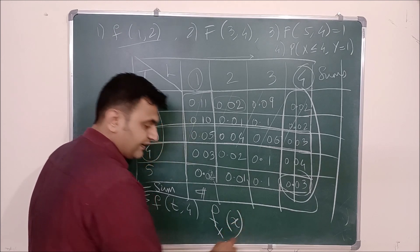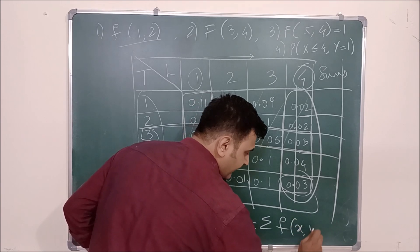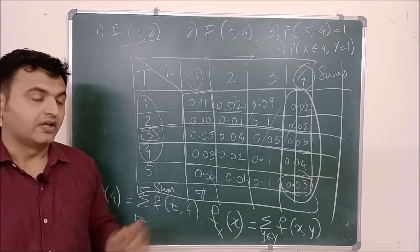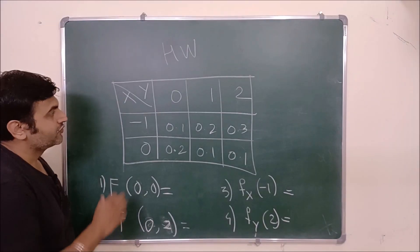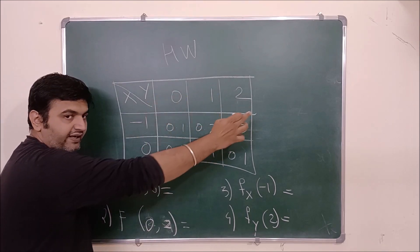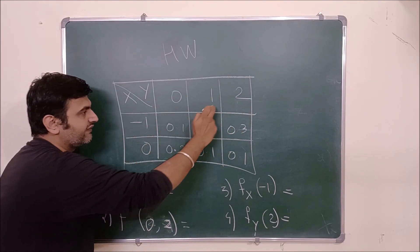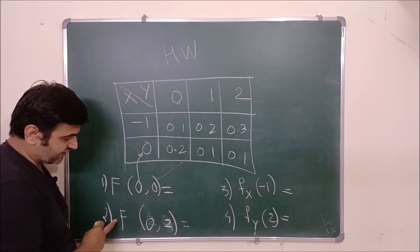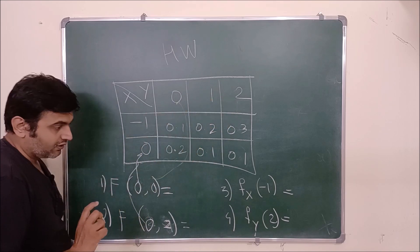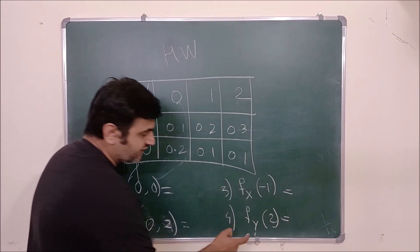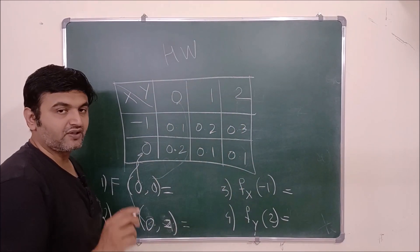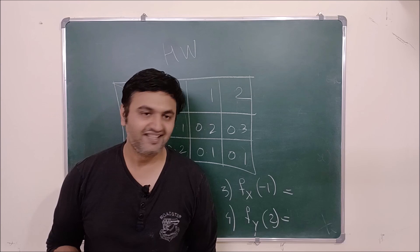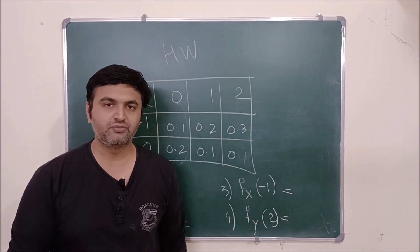In general, for random variable X, the marginal distribution at a given x is the sum of f(x, y) over all y, with x fixed and y varying. Similarly one can define the marginal for Y. Now here is a homework problem: given a joint PMF for X with range {x₁, x₂} and Y with range {y₁, y₂, y₃}, find: CDF at (0, 0), CDF at (0, 2), marginal distribution for −1, and marginal distribution for 2. Post your answers in the comment section. If you have any doubt about joint PMF, CDF, or marginal distribution, you can ask in the comment section.